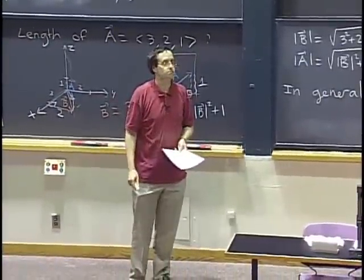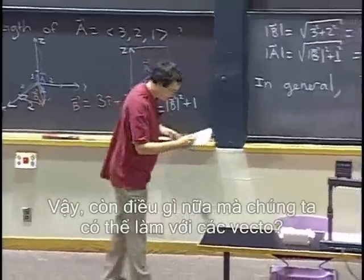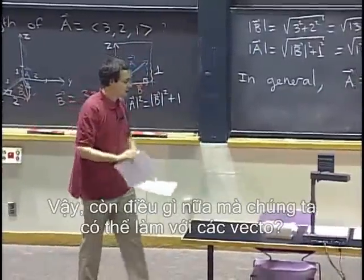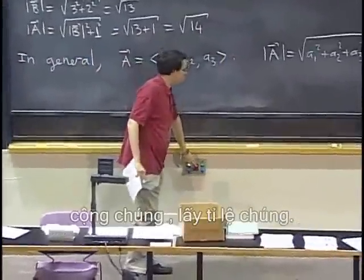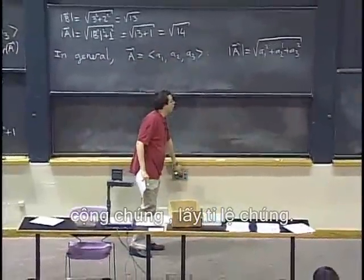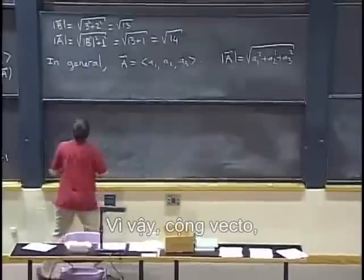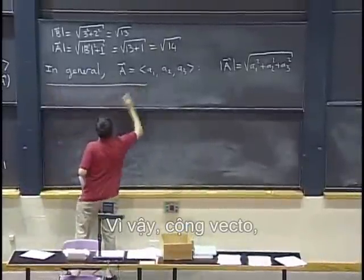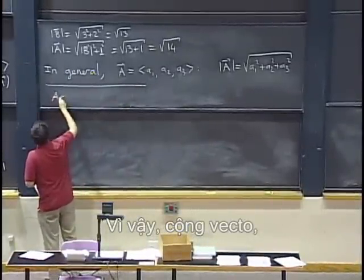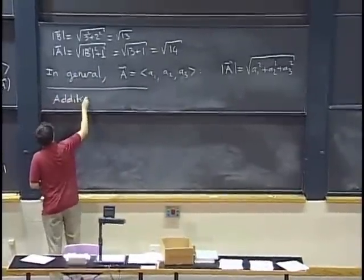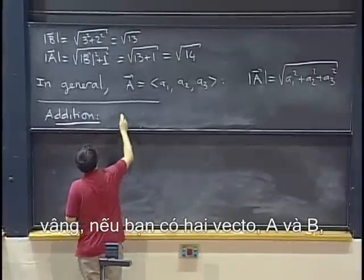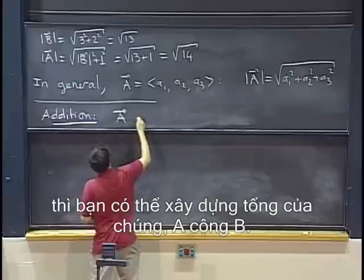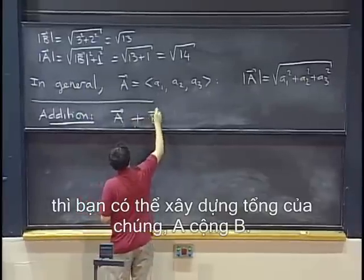More questions? No? OK. So, what else can we do with vectors? Well, another thing that I am sure you know how to do with vectors is to add them or to scale them. So, vector addition. So, if you have two vectors, a and b, then you can form their sum a plus b.